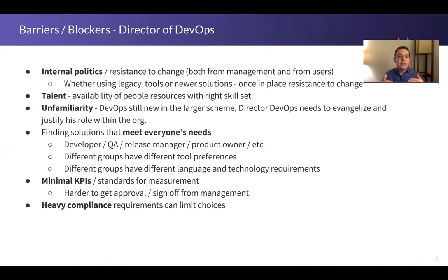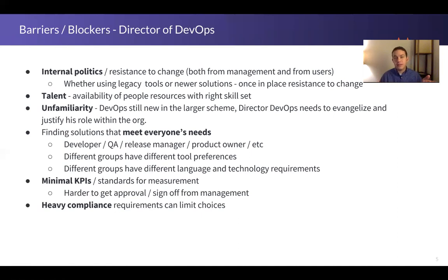Simple unfamiliarity — unfamiliarity with DevOps as a whole — can also be a blocker. DevOps can still be relatively new, so the director of DevOps often has a need to evangelize and justify their role within the org and show progress. Trying to get buy-in from multiple folks can be a blocker, and this can also diminish the desire to take risk — pushing them toward proven tools so they can show the value.